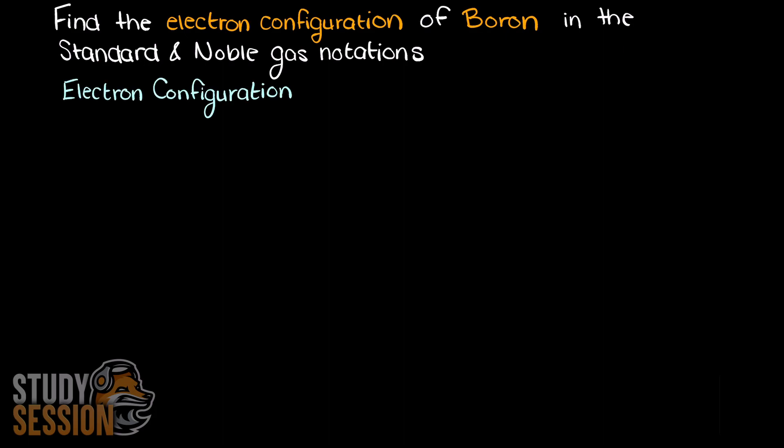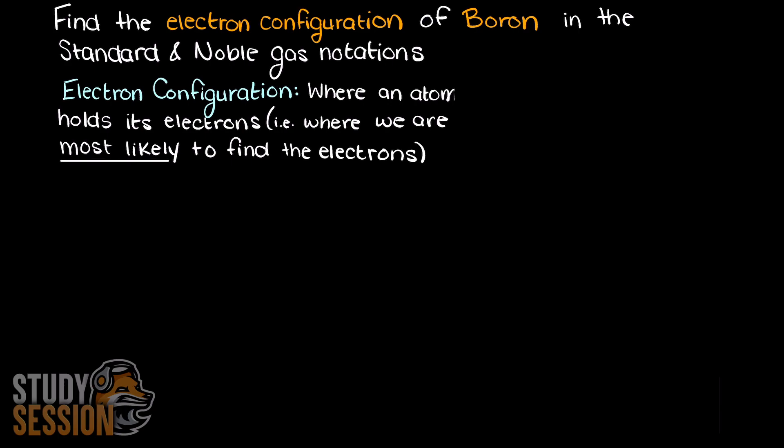When finding the ground state electron configuration of an atom, we are being asked where does this atom place its electrons, i.e. what shells and orbitals are its electrons most likely to be found in?